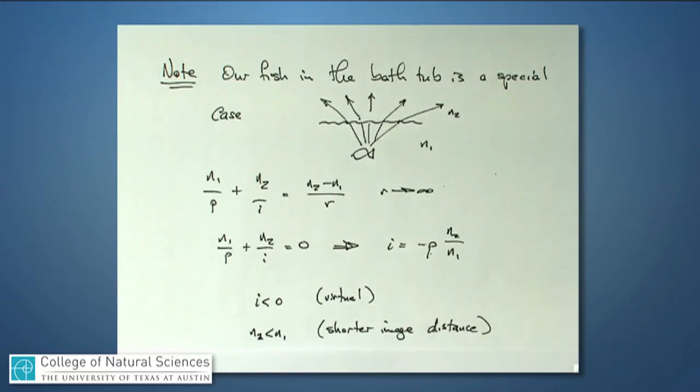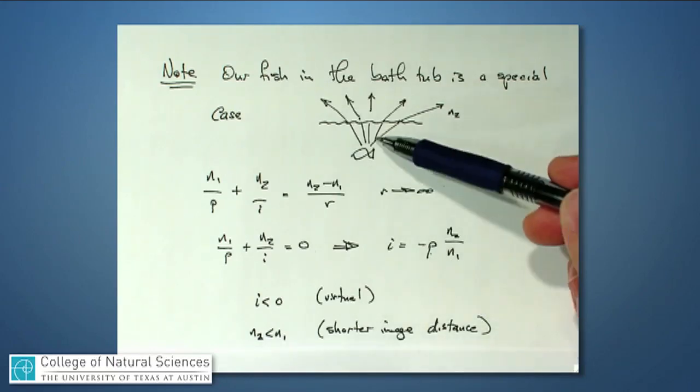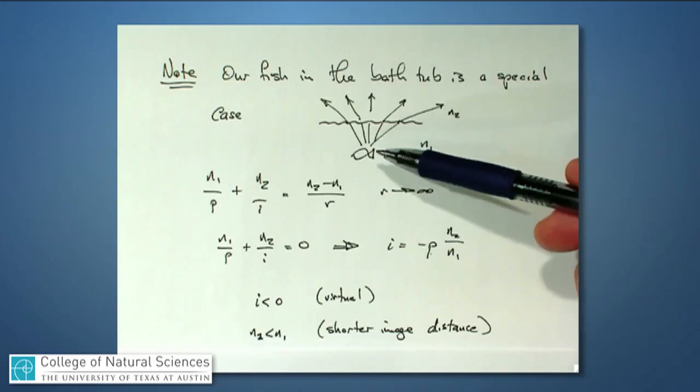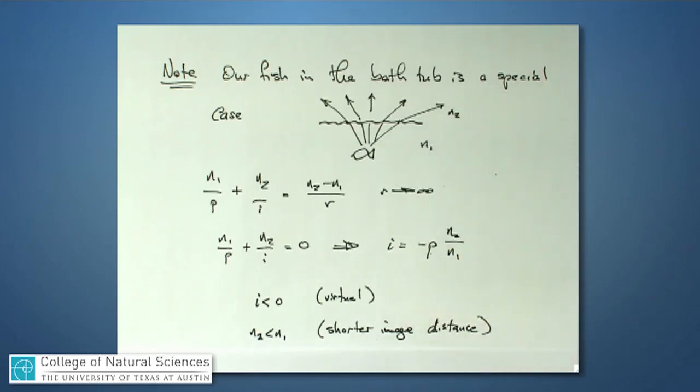I is less than zero. It's a virtual image. In other words, the fish is appearing to come back here. And since N2 is smaller than N1, the image distance is shorter than it really is in real life. The image distance is smaller than the object distance.